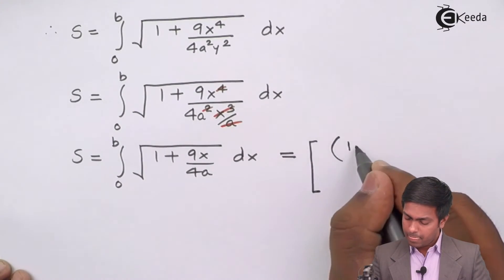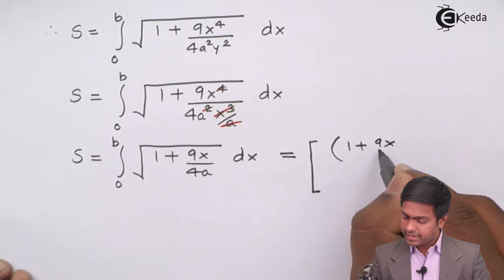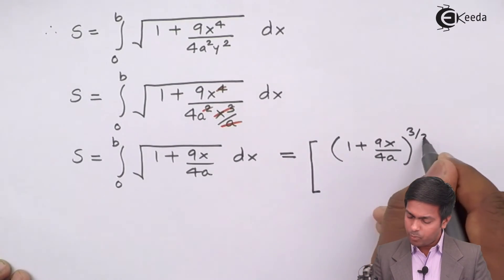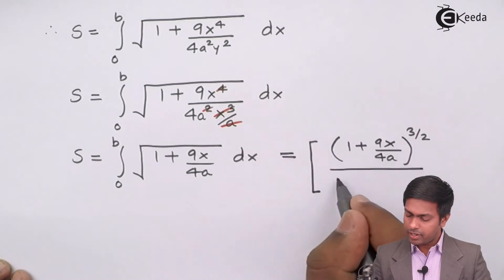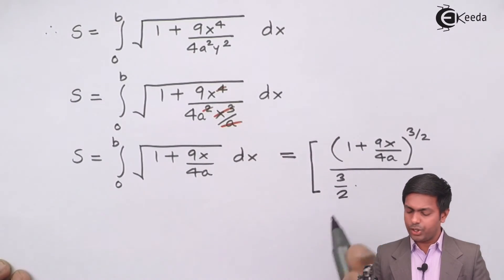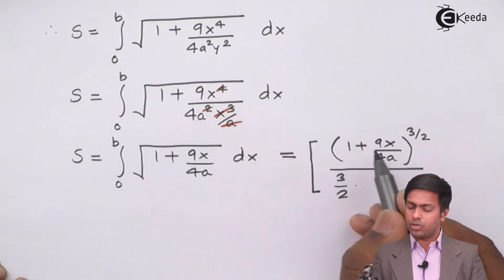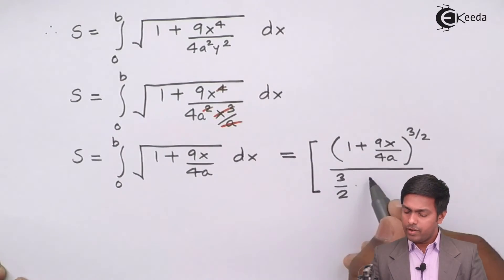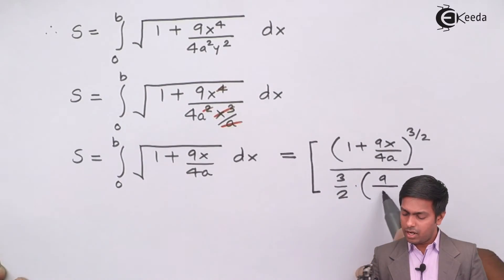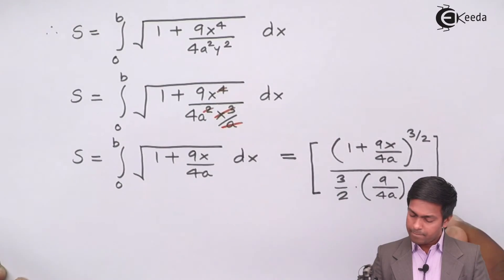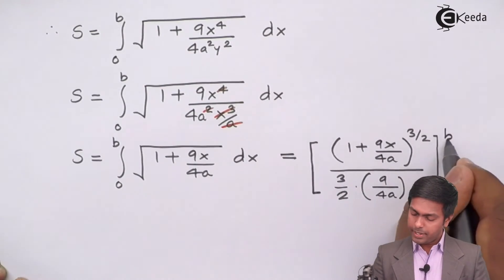1 plus 9x upon 4 a to the power 3 upon 2. In the denominator we will get 3 upon 2 into the derivative of this. So derivative of 1 is 0 and this 9x upon 4 a will give us 9 upon 4 a and this is from 0 to b.